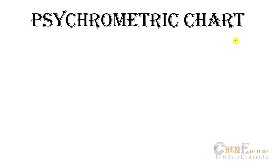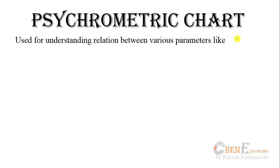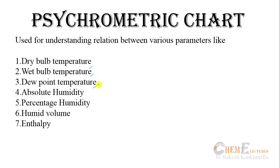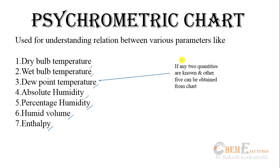The psychrometric chart is used for understanding the relation between various parameters like dry bulb temperature, wet bulb temperature, dew point temperature, absolute humidity, percentage humidity, humid volume, and enthalpy. If you know any two of these seven quantities, the other five can be found from this chart.